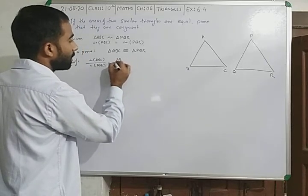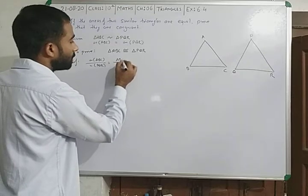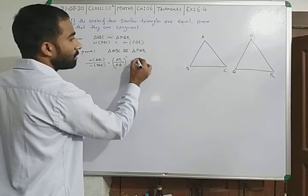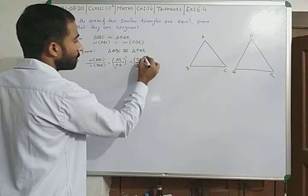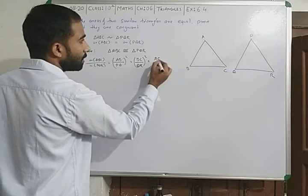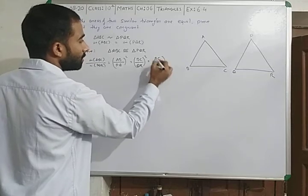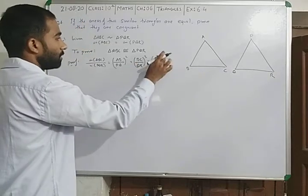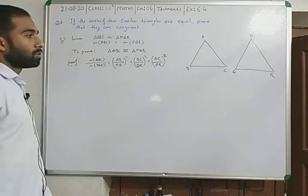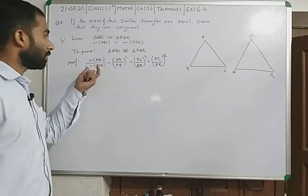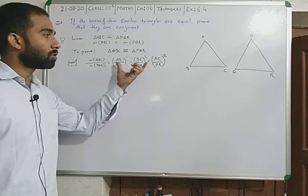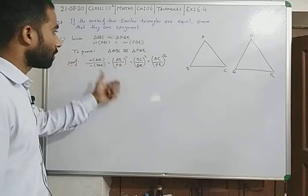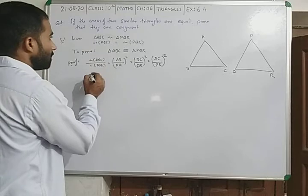We can write here AB upon PQ square is equal to BC upon QR square is equal to AC upon PR square. This is the theorem: if two triangles are similar, then the ratio of their areas is equal to the square of the ratio of their corresponding sides.